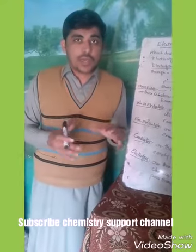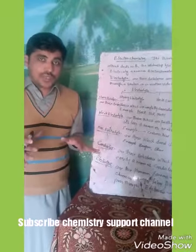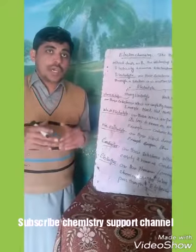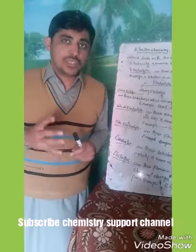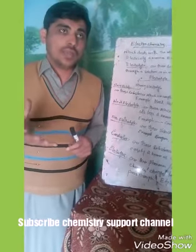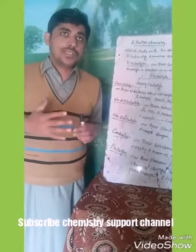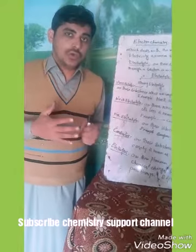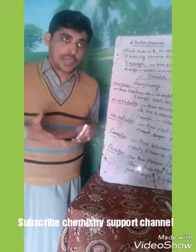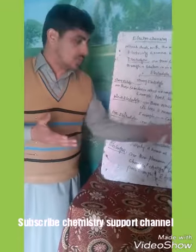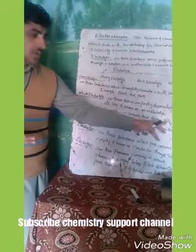Weak electrolytes are those electrolytes which are partially dissociated into their ions — meaning they cannot completely dissociate in water. Examples of weak electrolytes are carbonic acid and ammonium hydroxide.